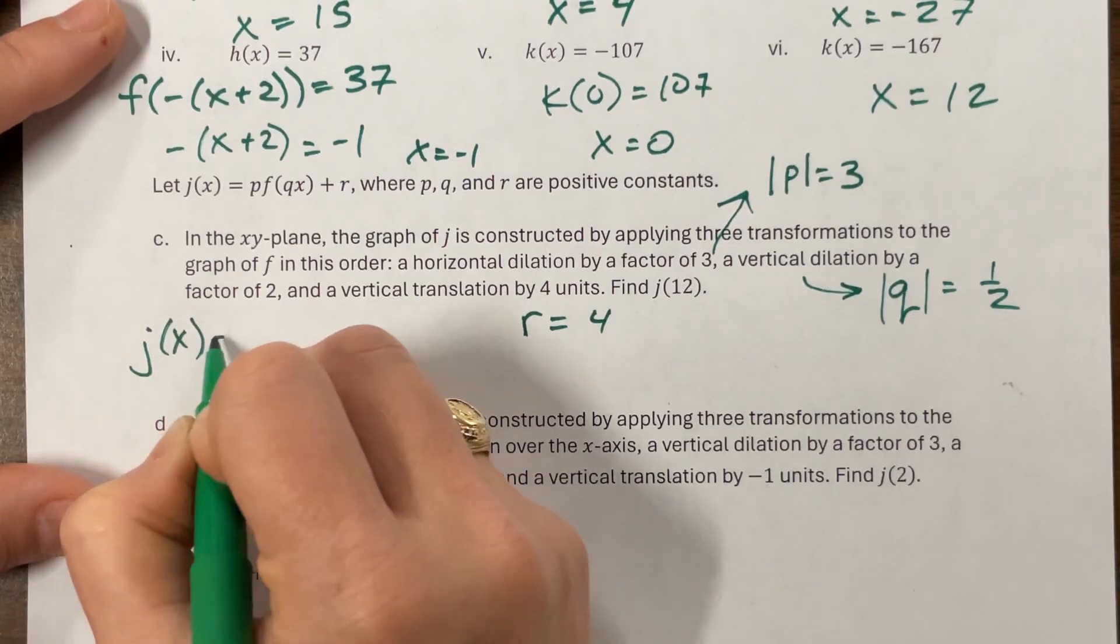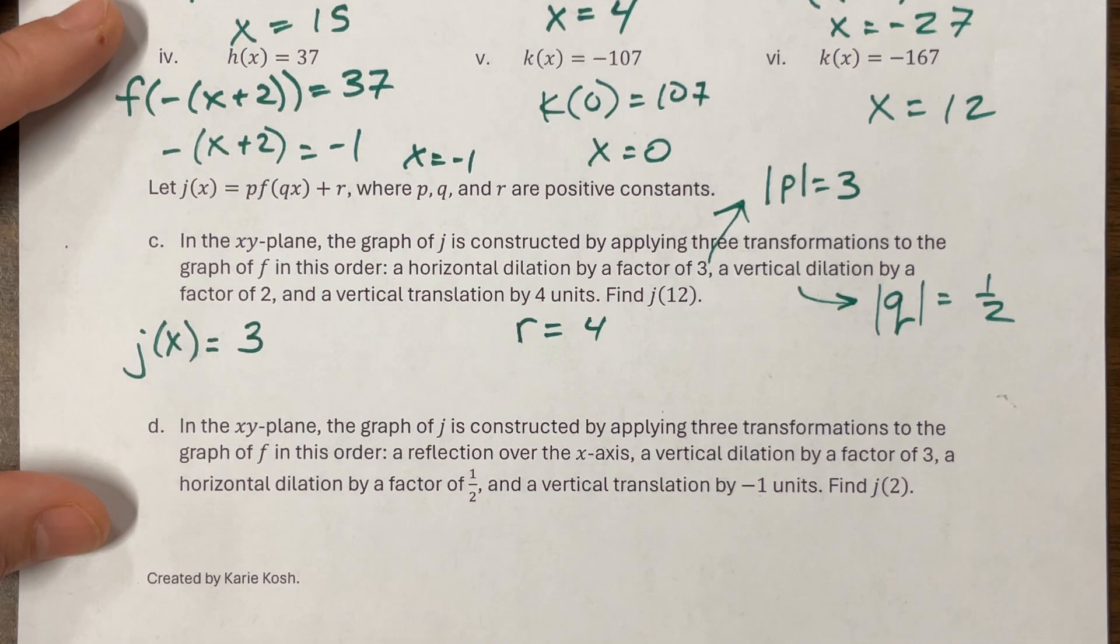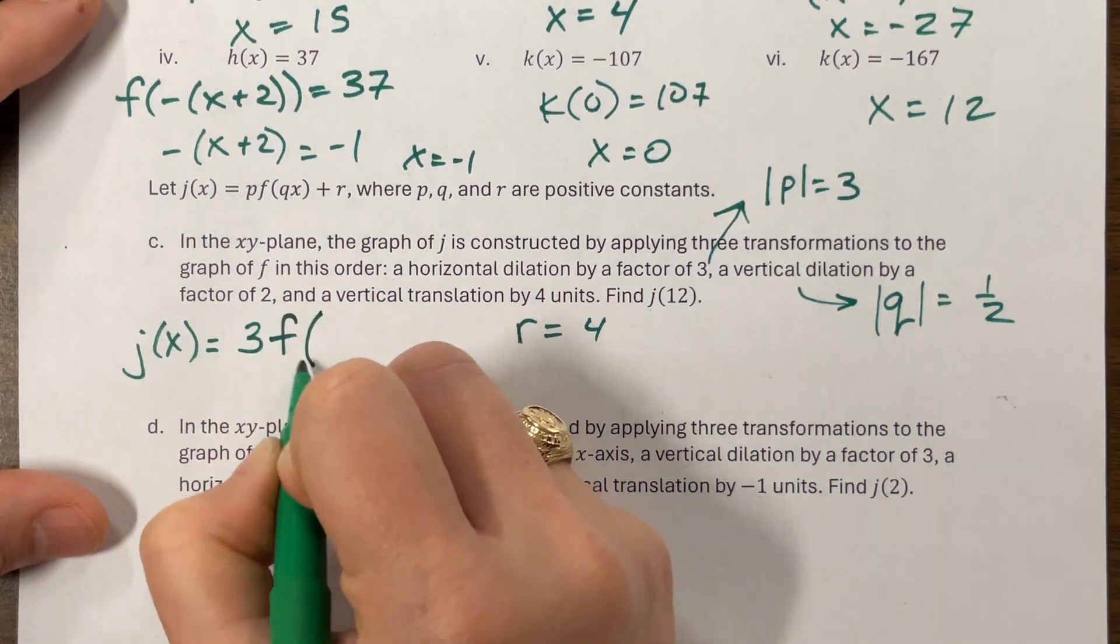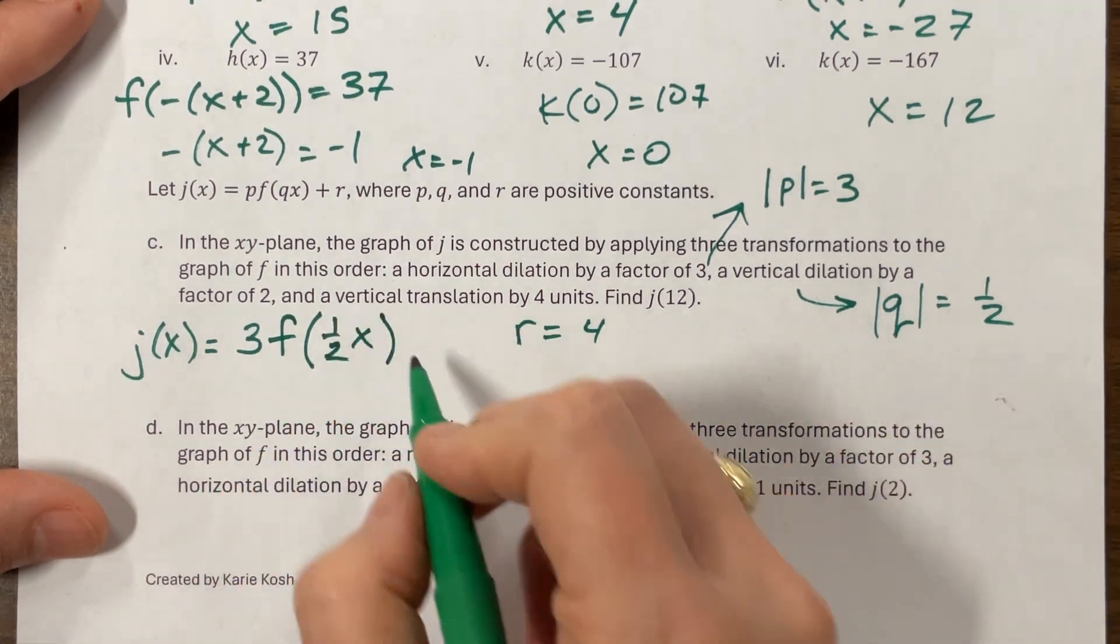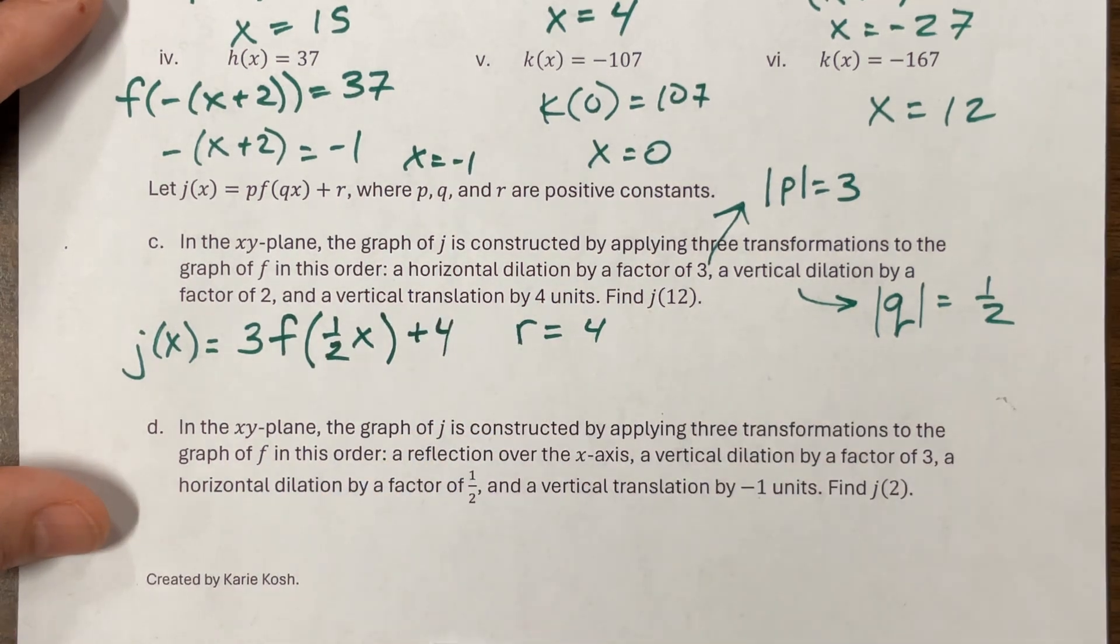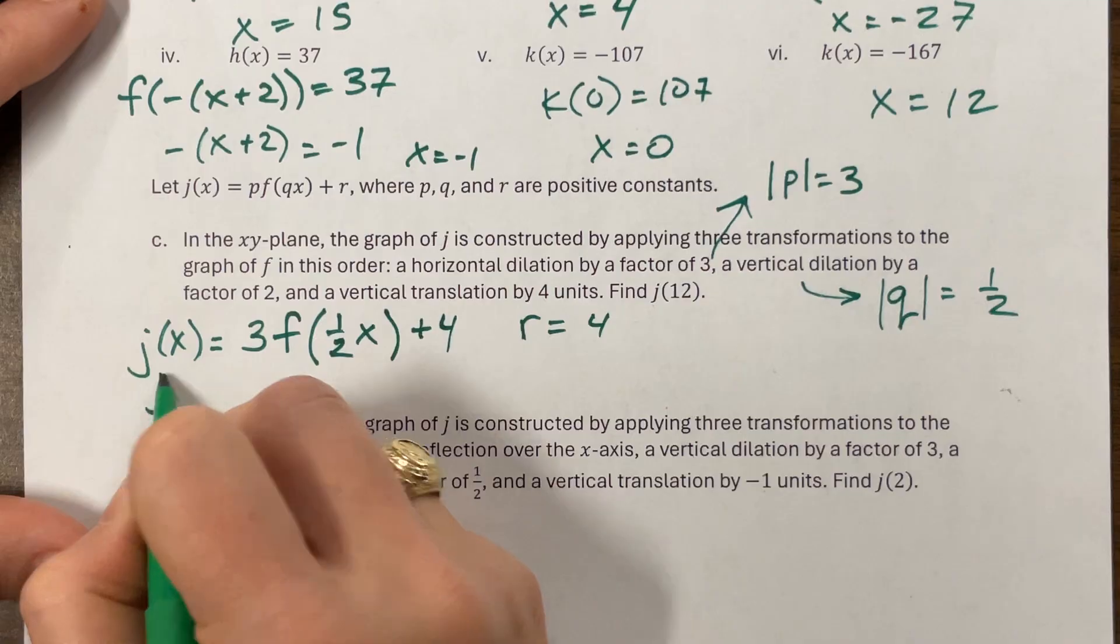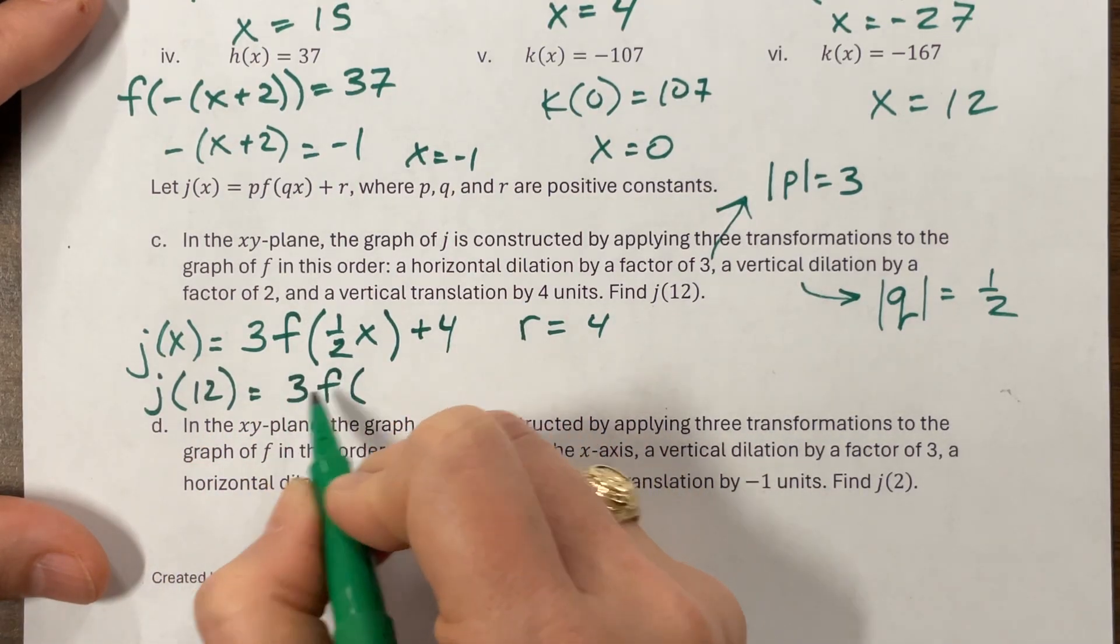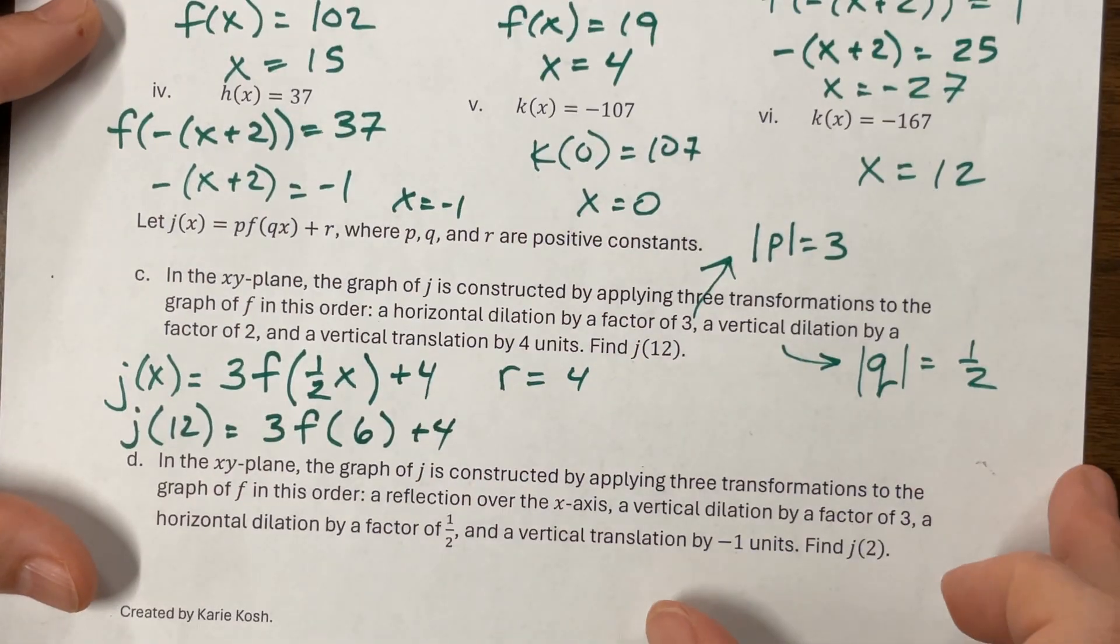So J of X would be equal to P would be three. We didn't, they didn't tell us we had a reflection, not a transformation. And so let's assume that we don't. And then it's F of our Q value is one half. So I could do X over two or one half X and then plus four. And so now they want me to find J of 12. So J of 12 would be equal to three times F of half of 12 is six.